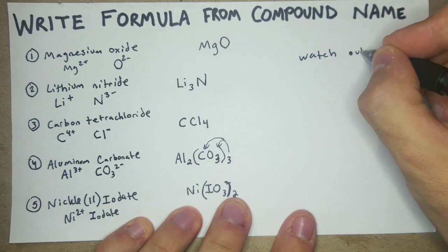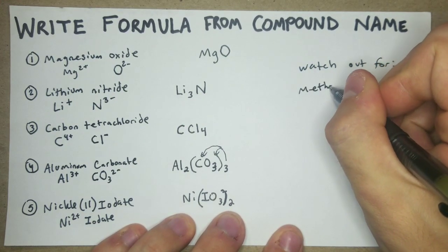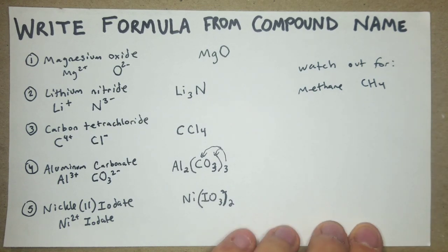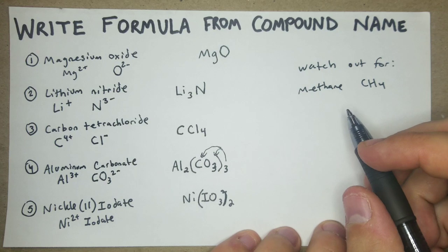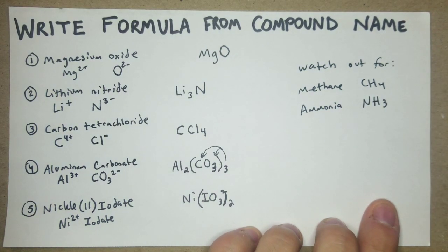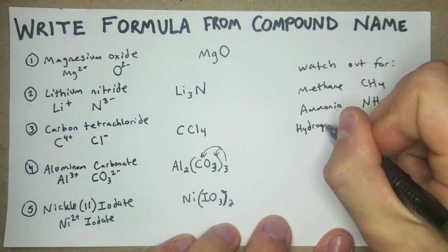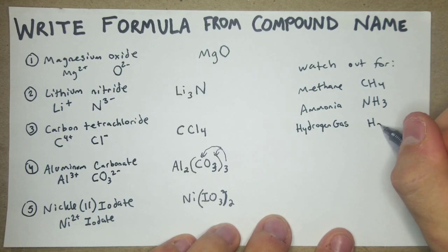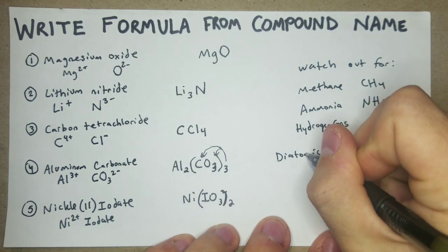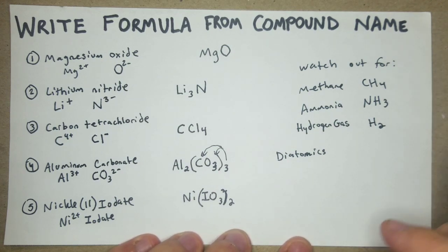Other things to watch out for are specific compounds your professor might expect you to know: methane is CH4, water is H2O, and ammonia is NH3. Also watch out for diatomics — if asked for hydrogen gas, it's not just H, it's H2, because diatomic elements naturally bond in pairs. A single hydrogen doesn't exist alone in the atmosphere.